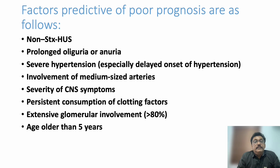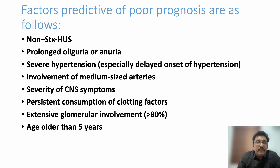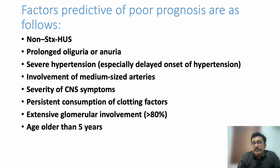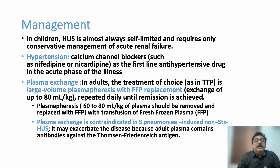Additional poor prognostic factors include involvement of medium-sized arteries, severity of CNS symptoms, persistent consumption of coagulation factors, extensive glomerular involvement, and patient age over five years. In HUS, the classical findings are thrombocytopenia and renal involvement; if CNS or liver involvement is present, this suggests sepsis or toxicity with higher complication rates.